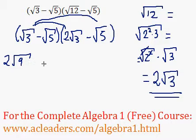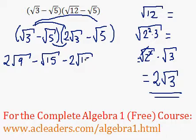Then root 3 times negative root 5 would be negative root 15. 3 times 5 is 15. Then inside, negative root 5 times 2 root 3, that would be negative 2 root 15. And finally, negative root 5 times negative root 5 is just positive root 25.